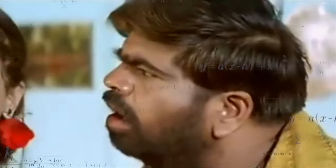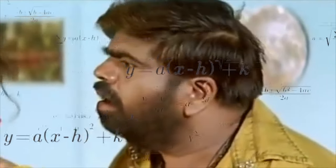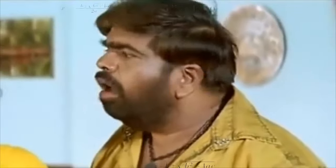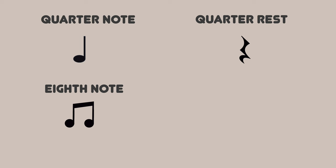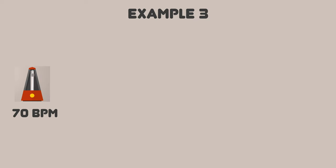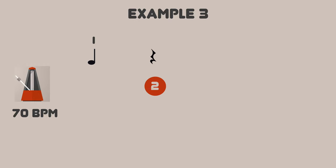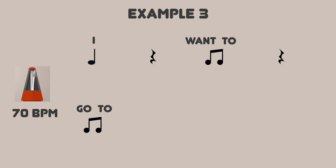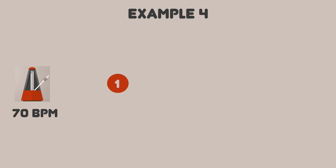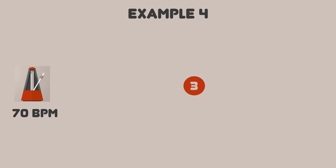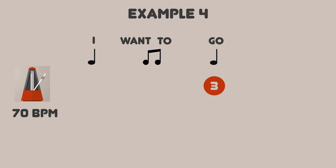If you are confused, let's look at simple examples of different types of rhythm, time signatures, and rests. In this example, we can combine a quarter note, another quarter note, a rest, and an eighth note to create different combinations. 'I want to go to mall today.' That pattern is what we call rhythm.